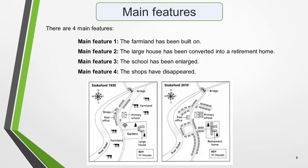So what information is contained in our maps? There are a number of different features we could select, such as the loss of the shops, the disappearance of farmland, the enlargement of the school, and the development of the large house into a retirement home. Many maps will contain many more changes than in our sample maps, and the changes may be more complex. In such cases you don't have time to write about all of them, and you will need to select just two or three features to focus on. Our maps are quite simple, so we'll list all four of the major changes identified.